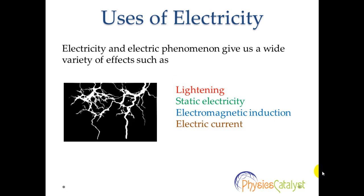Electricity and electrical phenomena give us a wide variety of well-known effects such as lightning, static electricity, electromagnetic induction, electric current, and much more. Lightning is the occurrence of a natural electric discharge of very short duration and high voltage between a cloud and the ground or within a cloud, mostly accompanied by a bright flash and thunder.